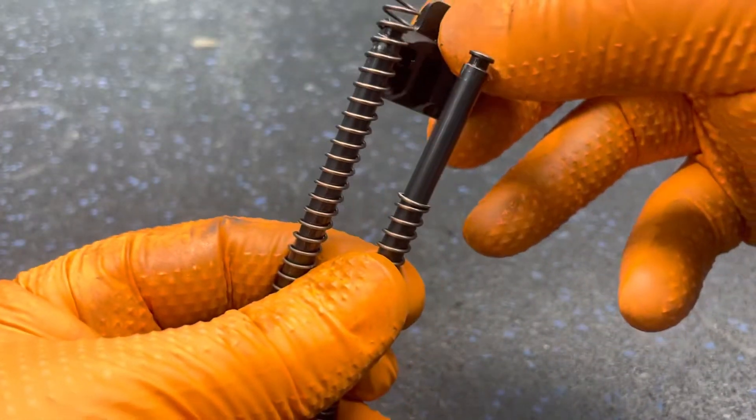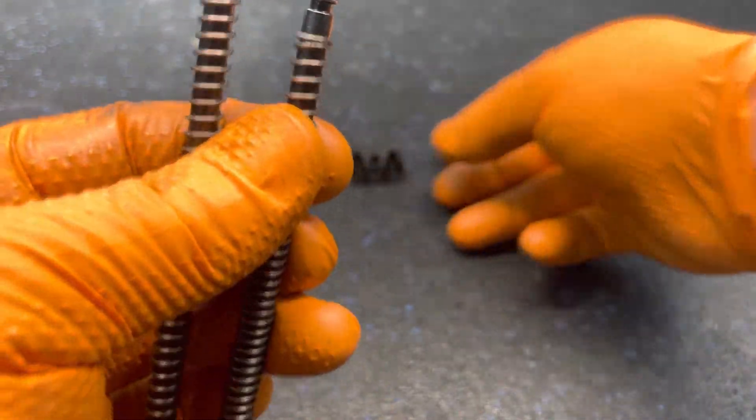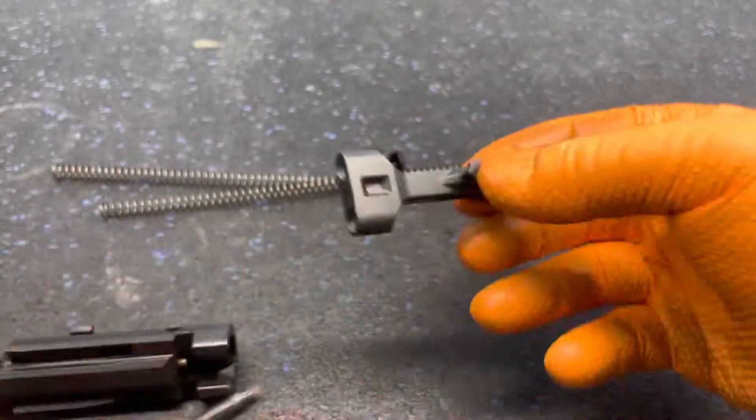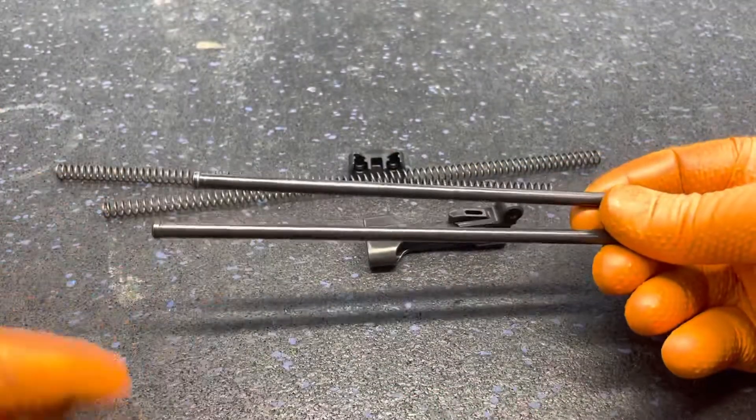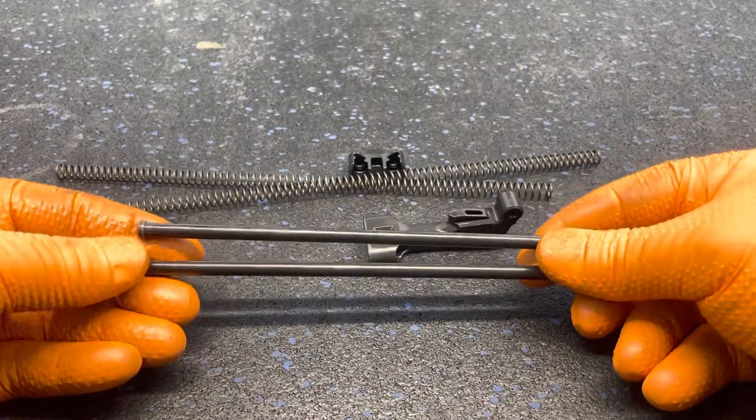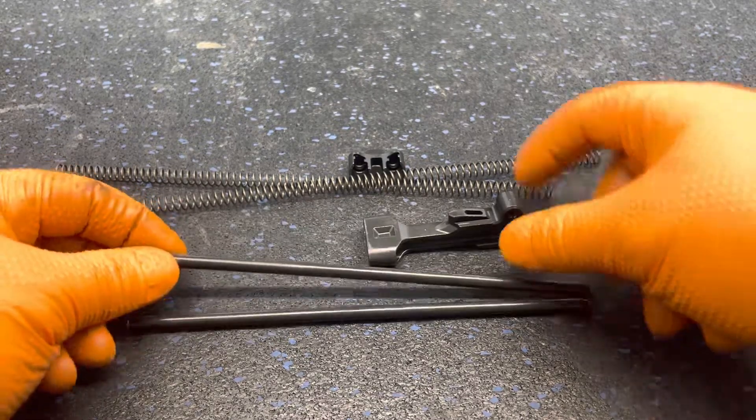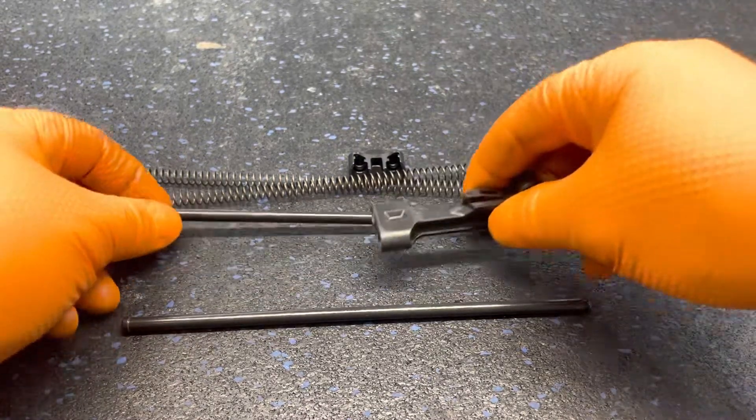On the other side just push down on the spring and then it will pull right off for you. The thing to note is that the recoil rod has a larger head on one side than the other, so they will only assemble one way into the op rod.